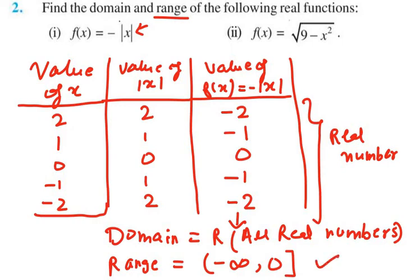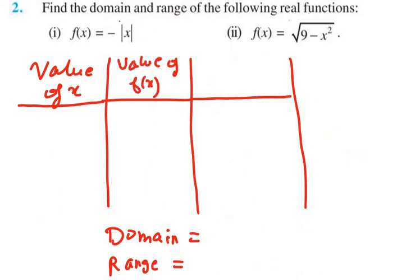This completes the first part of question number 2. In the second part, we need to find the domain and range of f(x) = √(9 - x²). I will again use the tabular method, taking some positive as well as negative values of x: 1, 2, 3, 4, minus 1, minus 2, minus 3, and minus 4.